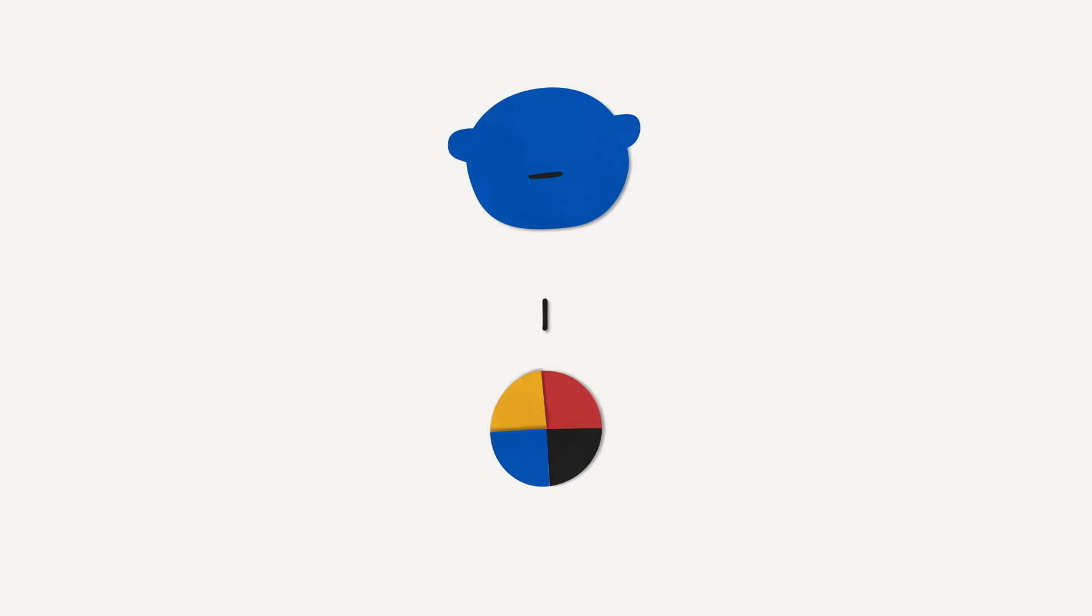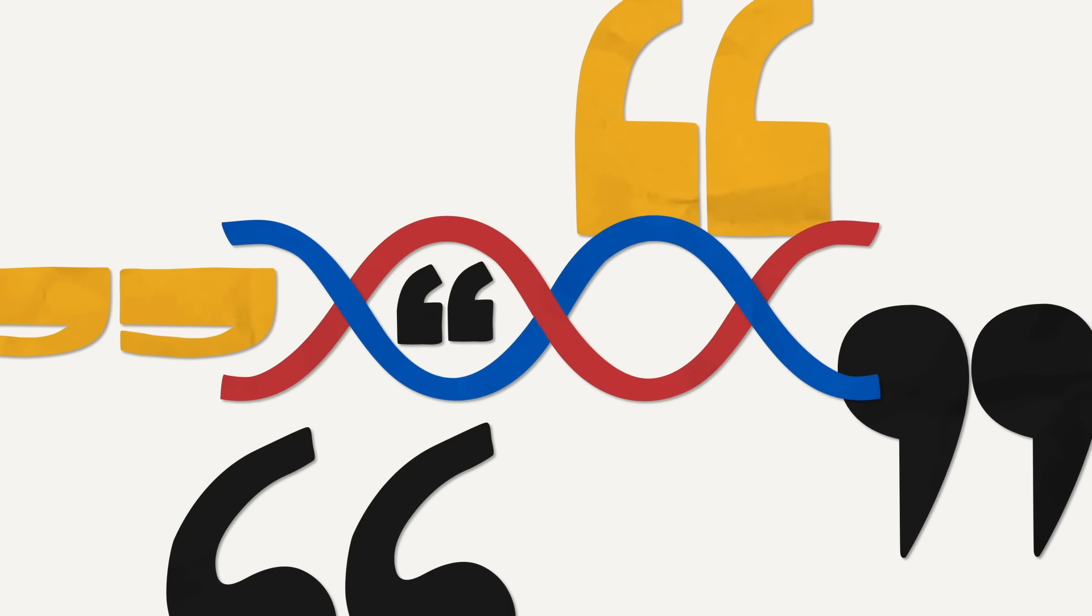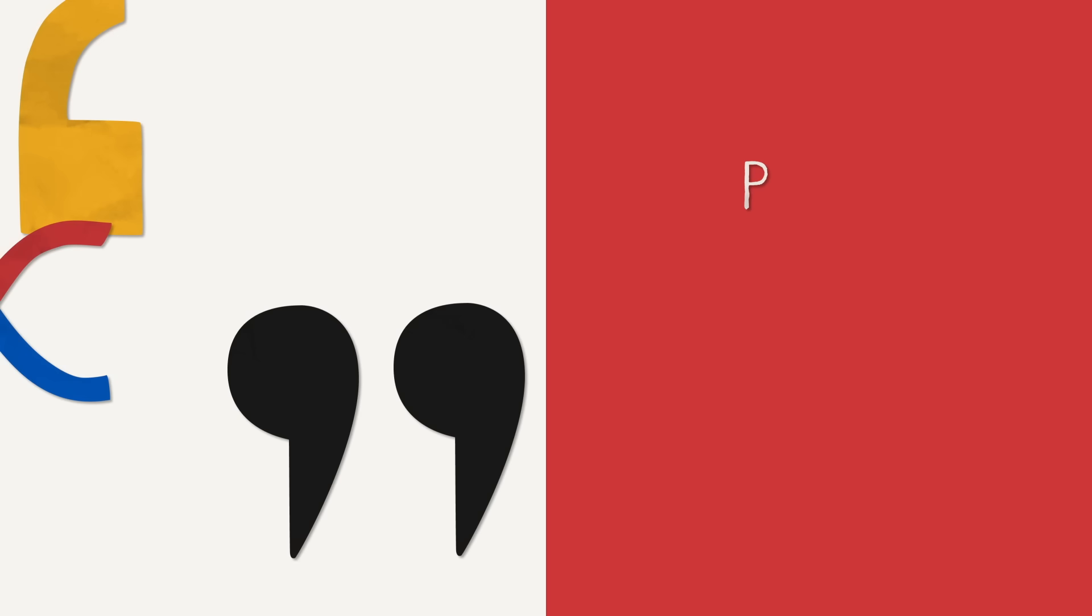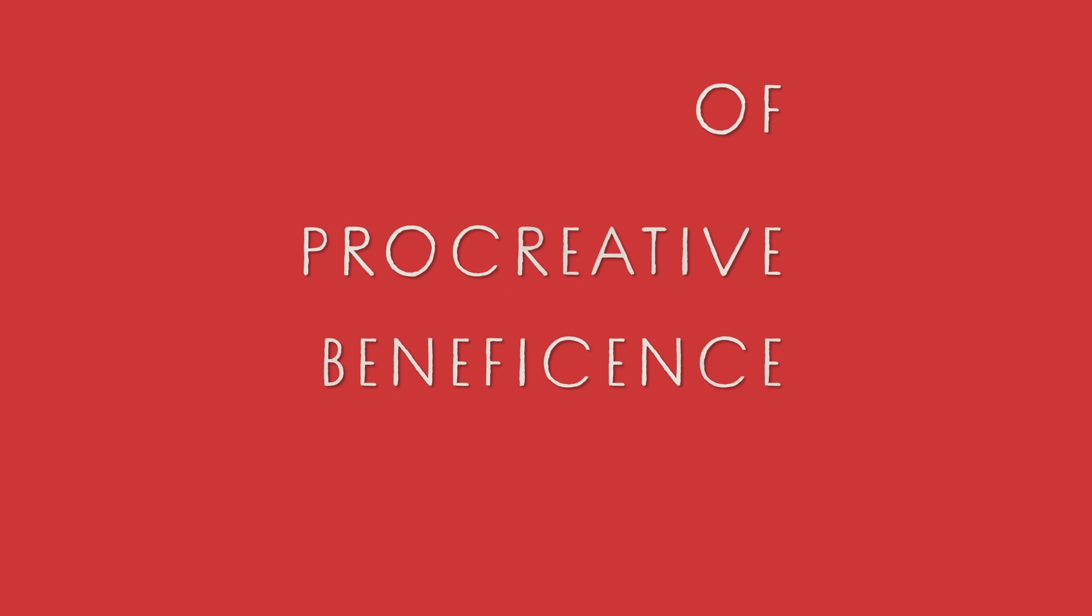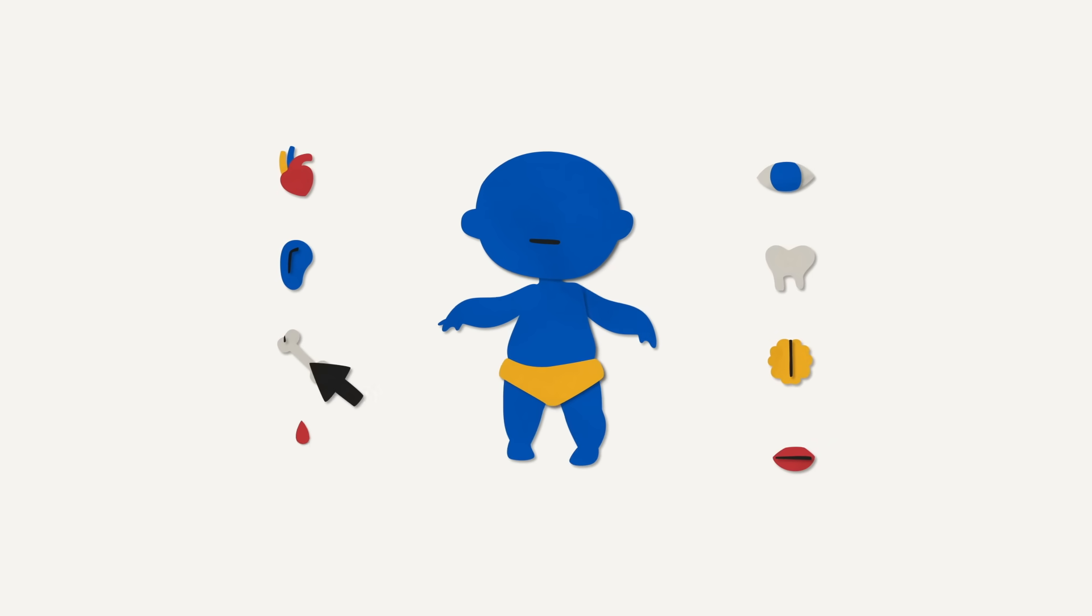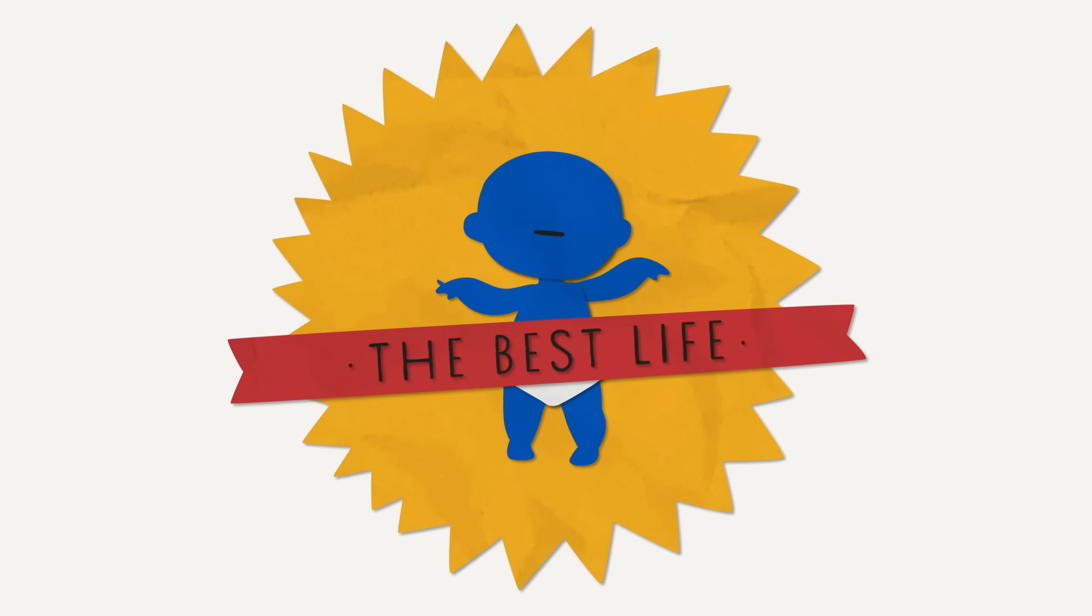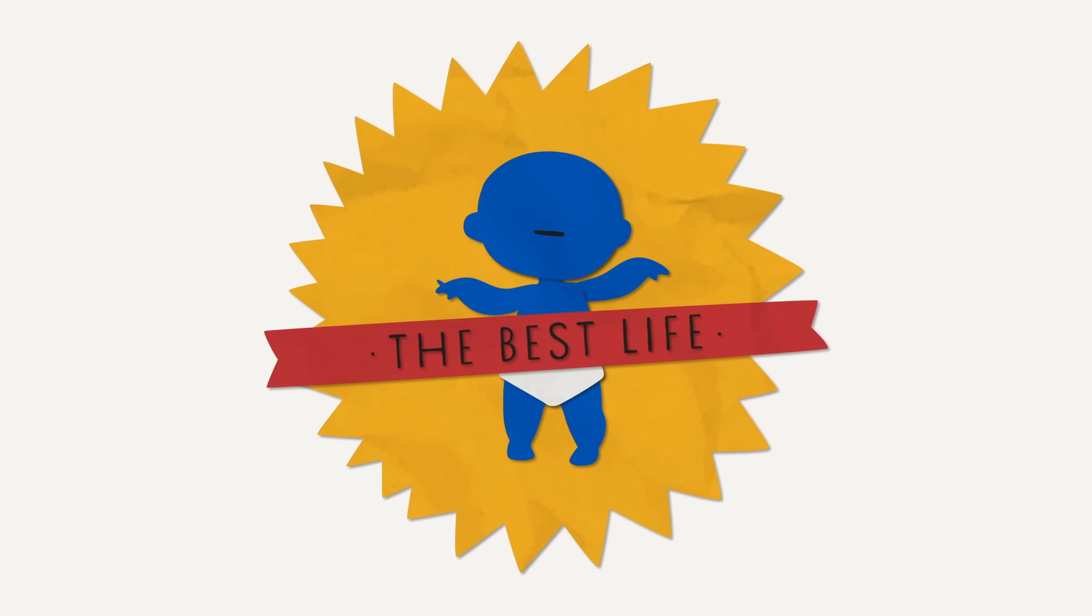The rise of genetic technologies like PGD have led philosophers to consider this kind of question. And to make sense of these dilemmas, many thinkers rely on the principle of procreative beneficence. Coined by philosopher Julian Savulescu, this principle says any prospective parent able to select their future child's traits should give their child the best chance at the best life. But defining the best life is incredibly tricky.